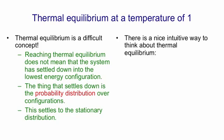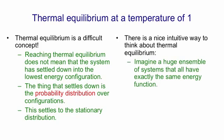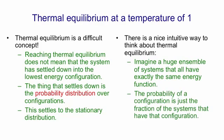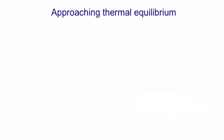A nice intuitive way to think about thermal equilibrium is to imagine a huge ensemble of identical systems that all have exactly the same energy function — imagine a very large number of stochastic Hopfield nets all with the same weights. In that huge ensemble we can define the probability of a configuration as the fraction of the systems that are in that configuration, and so we can understand what's happening as we approach thermal equilibrium.